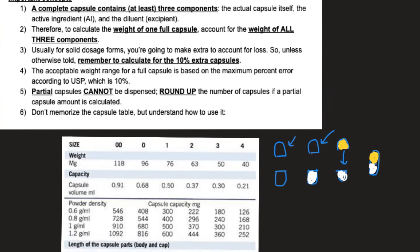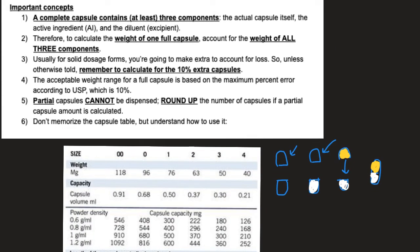So when you're calculating the weight of a full capsule, you're going to account for the weight of: number one, the capsule itself, also called the capsule shell; number two, the weight of the active ingredient (AI); and number three, the weight of the diluent, also called the excipient.